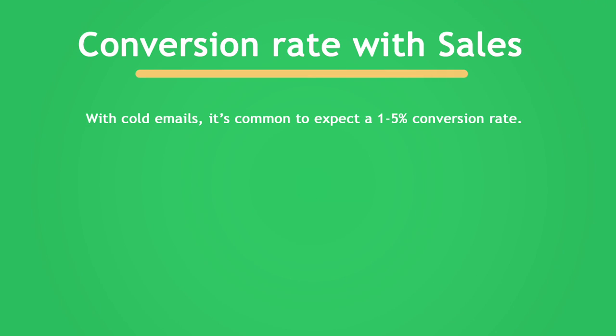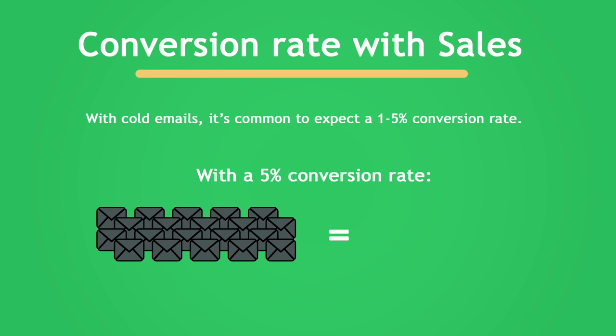How many people should you have on this list? Now, with salespeople, a rule of thumb is to expect a 1% to 5% conversion rate when it comes to cold emails. In other words, with a 5% conversion rate, you need to email 20 people just to get one person to say yes. But that's just a point of reference, and you're not a salesperson. So a 1% to 5% conversion rate should be much higher for you.